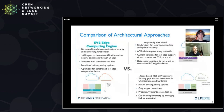On the philosophy behind EVE in terms of architectural approach: EVE is a bare metal abstraction layer, so you sit right on top of the hardware. We support both virtual machines and containerized workloads.